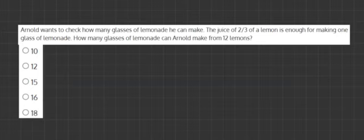To start, we're going to highlight the key parts. We've got the juice of two-thirds of a lemon, and it makes one glass of lemonade. Arnold has 12 lemons.